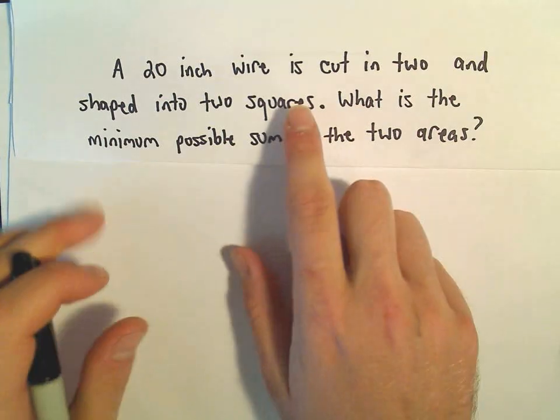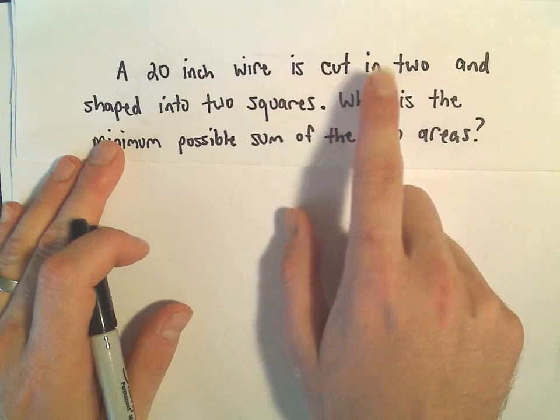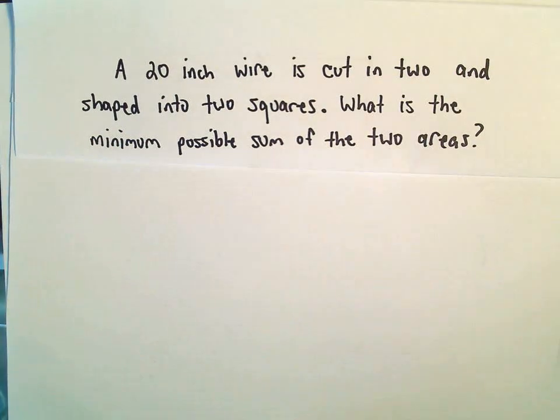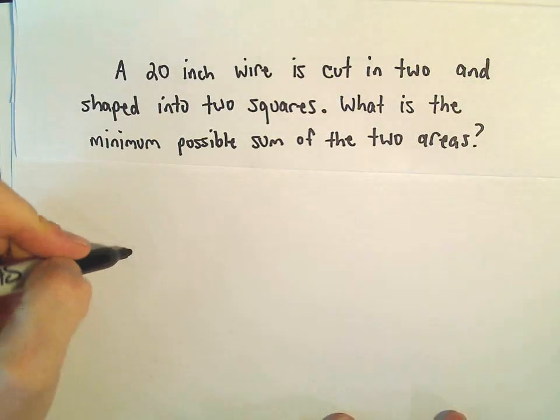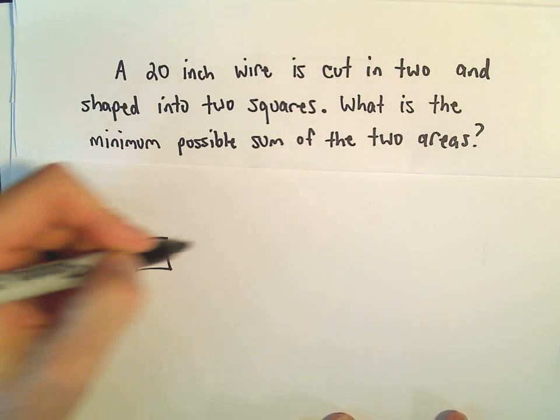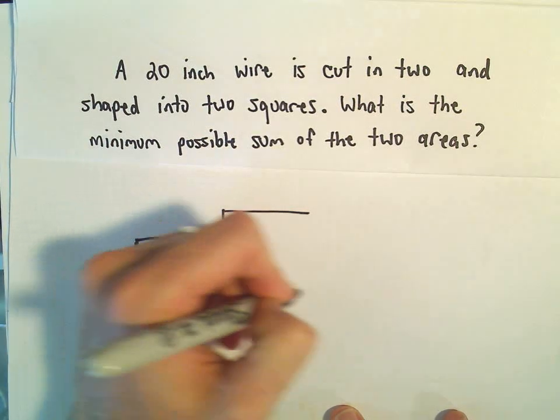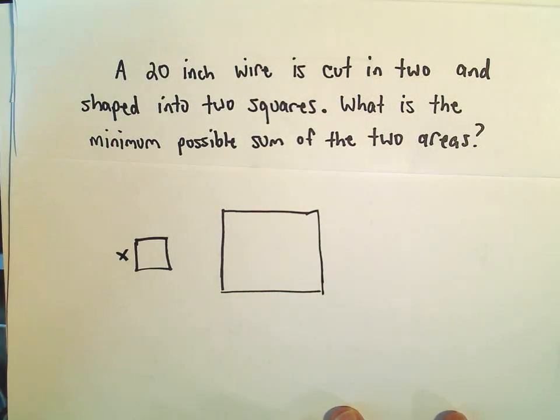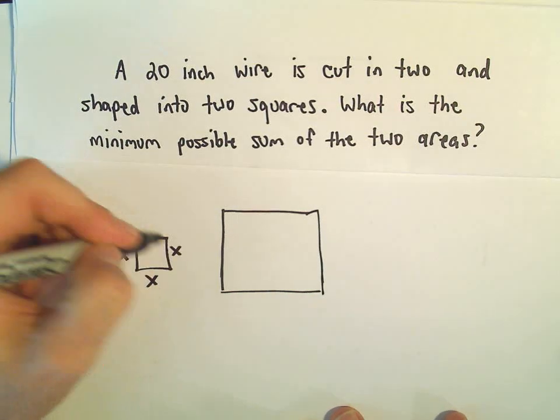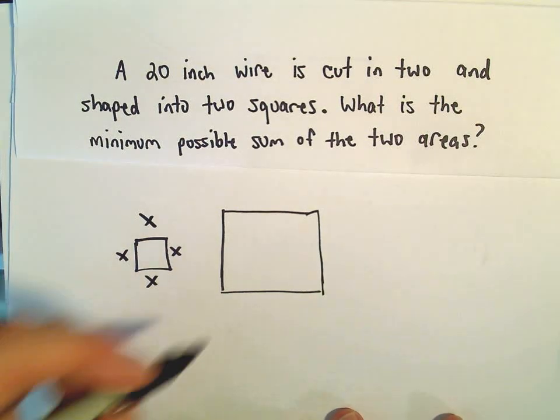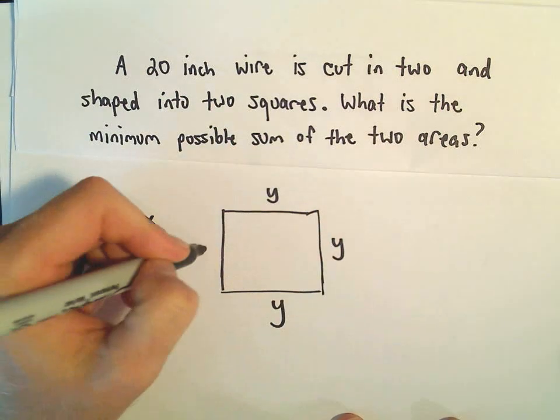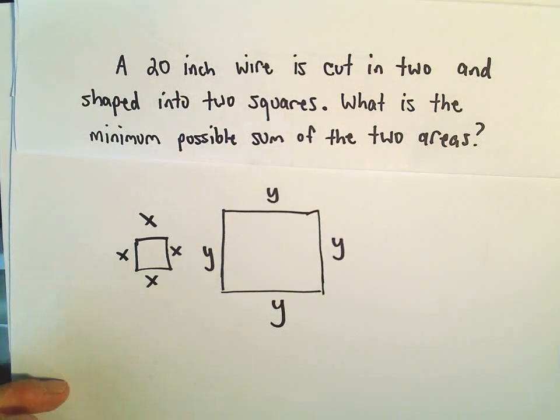So one thing to maybe clarify, we're not necessarily cutting these into two equal pieces. If we were making them into two equal pieces, everything would already be determined. All right, so there's my two squares. Let's suppose one of them has a side length of x, so it's x all the way around. And let's suppose that the other one has a side length of y. Again, they don't have to be the same. I'm just labeling things generically.